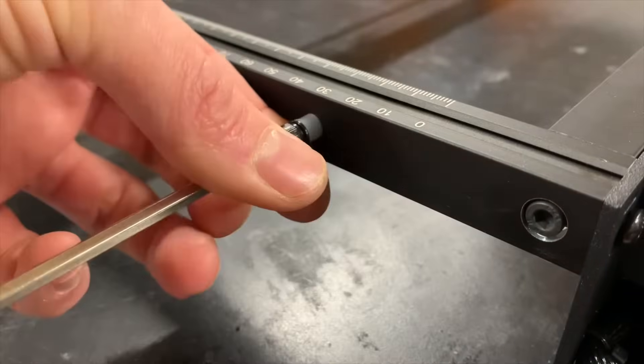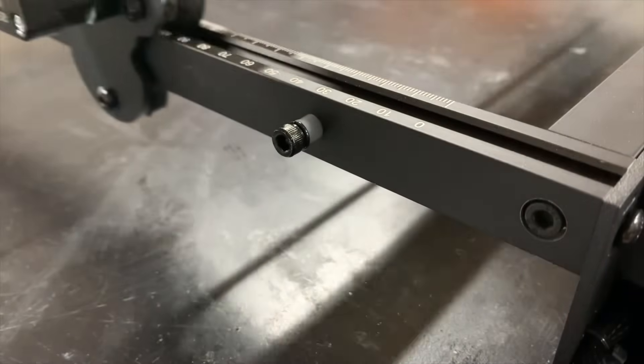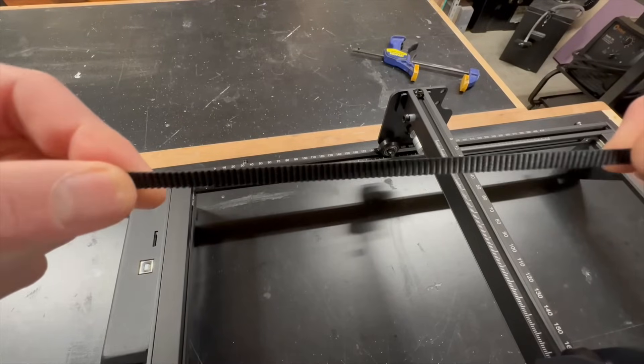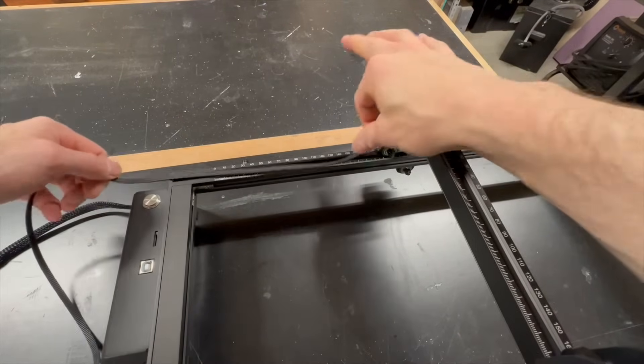After I put in the y-axis forward limit stop, it was time for the timing belts. The machine comes with the x-axis timing belt already installed, but the y-axis ones need to be put in.